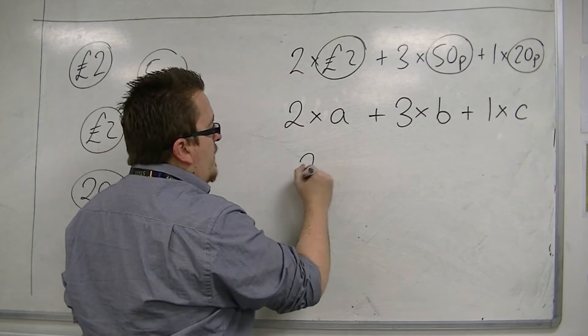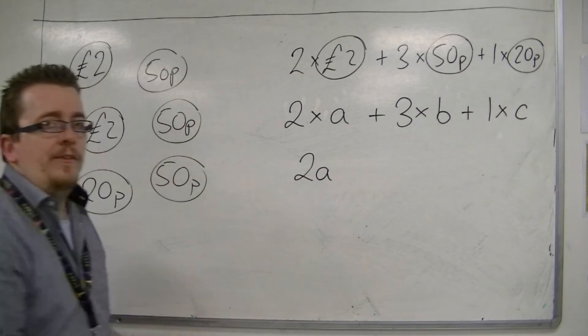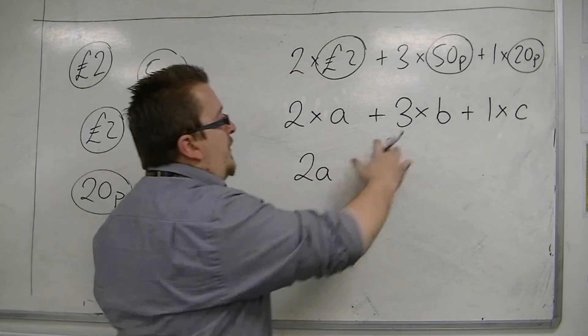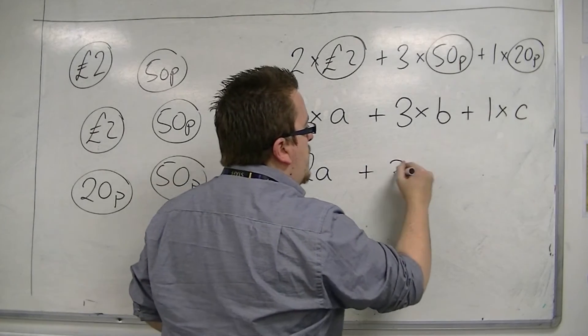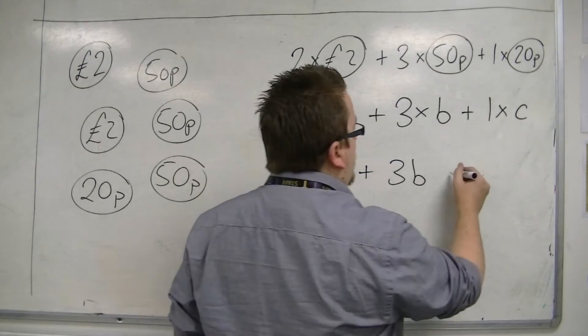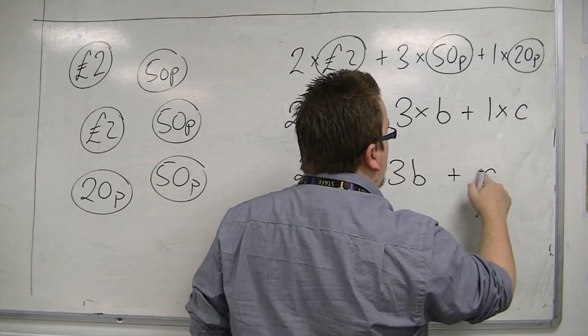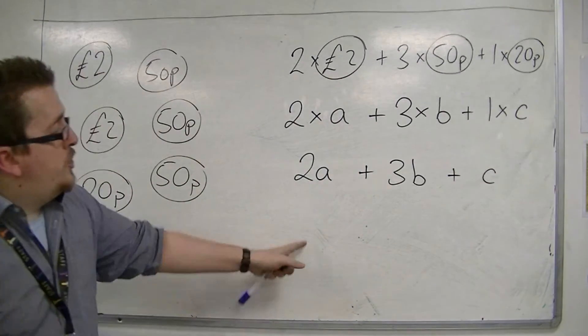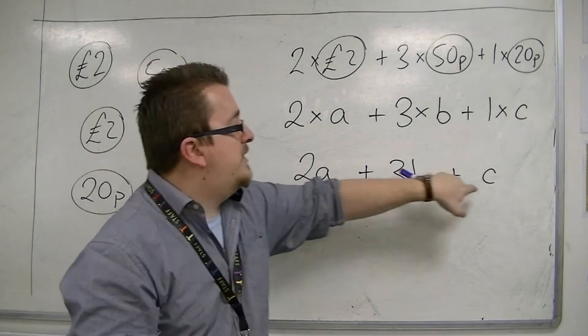Two times A, well I could just write that as two A, two A's. And instead of saying three times B, I've got three B's. And instead of saying one C, I could say, well I've just got a C. So, I've actually got two A's, three B's, and one C.